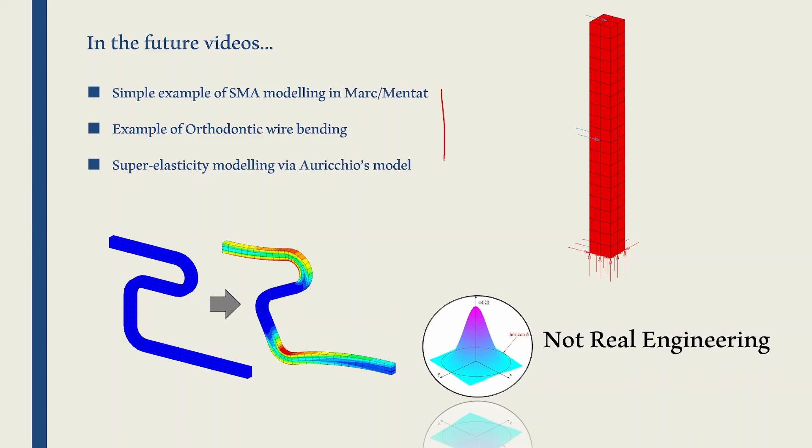Let's stop here. But we have three more videos coming up. In next video, we will solve a simple example using MARC Mentat. We will build the example from scratch, so you will not need any files to start. Then in the video after that, we will solve orthodontic wire bending example which is shown over here. And finally in the last video, we will discuss mathematical model used in MARC for super elasticity and also solve an example using that model.